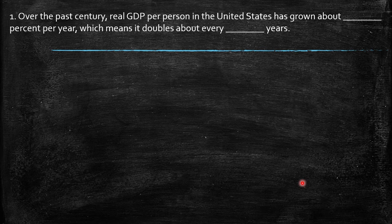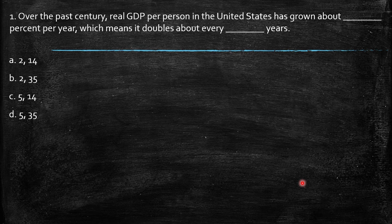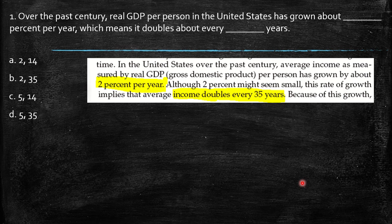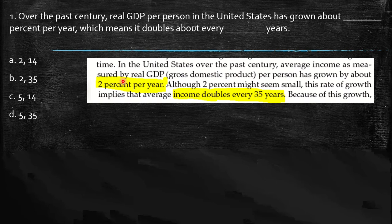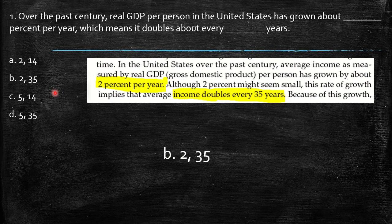The first question says: over the past century, real GDP per person in the United States has grown about what percent per year, which means it doubles every how many years? We just need to have read the content of that chapter. In the first part, it clearly states that the United States over the past century, average income as measured by real GDP per person, has grown about two percent, and income doubles every 35 years. So naturally the answer is B: 2% per year and it doubles every 35 years.